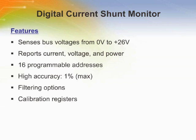The INA219 is a digital current shunt monitor with an I2C and SMBus-compatible interface. It provides digital current, voltage, and power readings necessary for accurate decision making in precisely controlled systems. The INA219 monitors both shunt drop and supply voltage with programmable conversion times and filtering. A programmable calibration value combined with an internal multiplier enables direct readouts in amperes. An additional multiplying register calculates power in watts. The INA219 senses across shunts on buses that can vary from 0 volts to 26 volts.